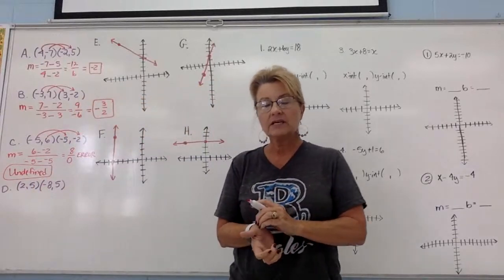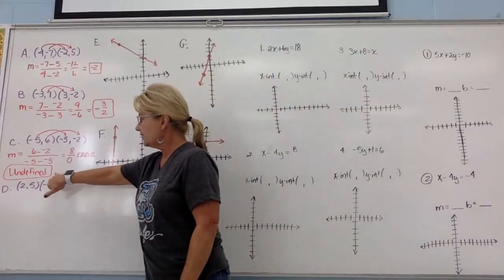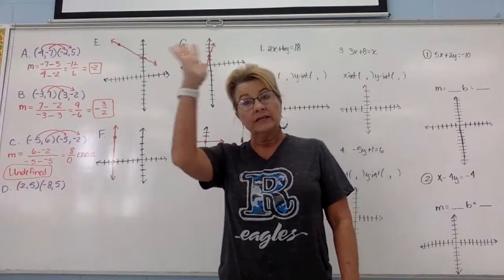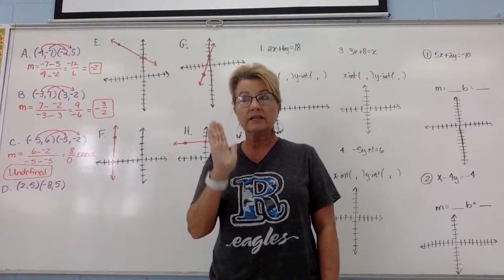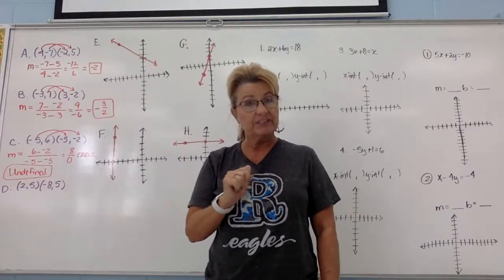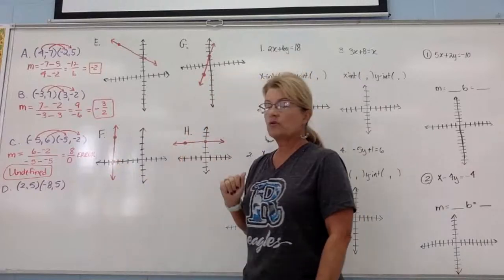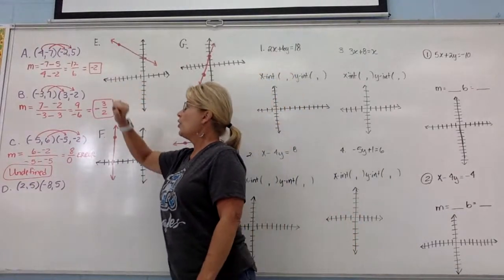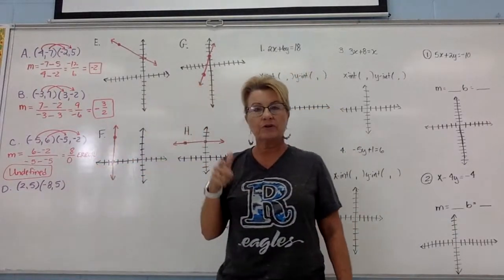An undefined slope has a very distinct look. Most lines in the coordinate plane tilt or slant, but every now and then you'll run into a perfectly vertical or perfectly horizontal line. These are special — they don't have regular slope values like negative 2 over 1 or negative 3 over 2. Their slopes relate to this concept of undefined.